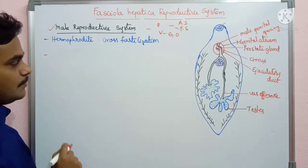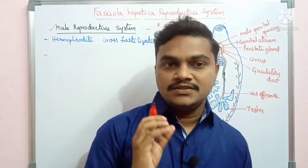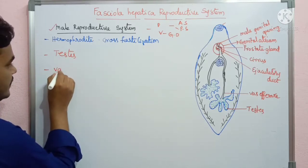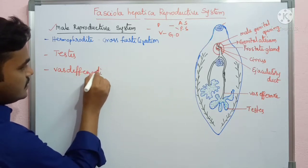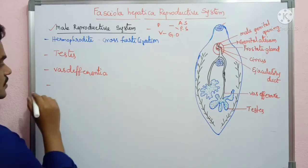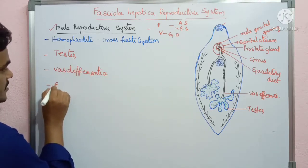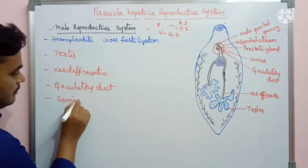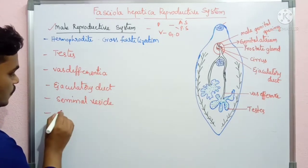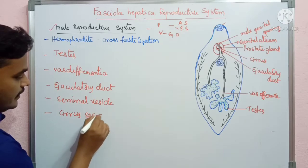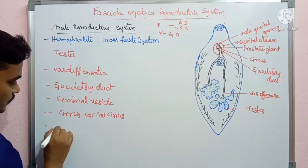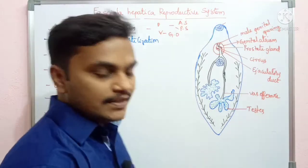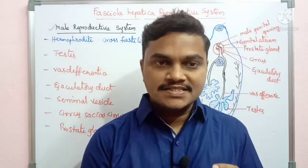The parts present in the male reproductive system are: testes, which are located in the posterior middle of the body; vas deferens, which is a duct that transfers sperm from the testes; ejaculatory duct; seminal vesicle; cirrus sac; cirrus; and one accessory gland, that is the prostate gland. Both male and female reproductive system ducts are fused to form common ducts.